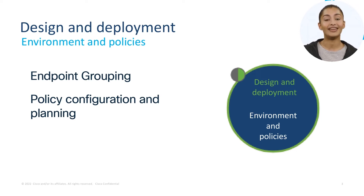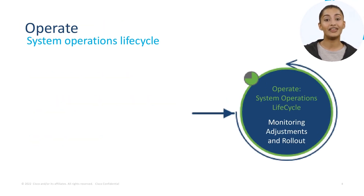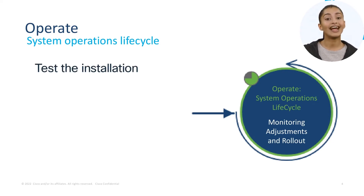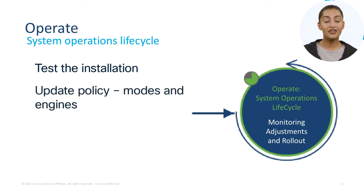Once you have a certain number of connectors installed in a lab environment, it is time to move to the next stage: operate. This section provides strategies to optimize features and functionalities in Secure Endpoint. As new options, features, and security fixes are released, it is recommended that a review is conducted of new connector versions to upgrade the endpoint for improved protection. A review of the policies you have in place and which engine to run for each policy may also be needed.